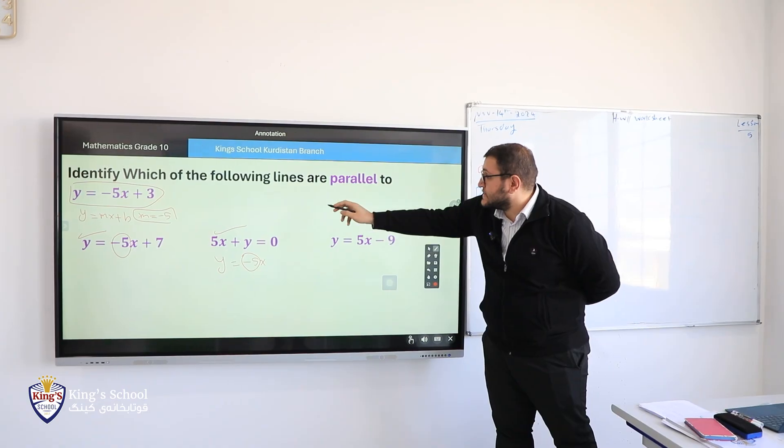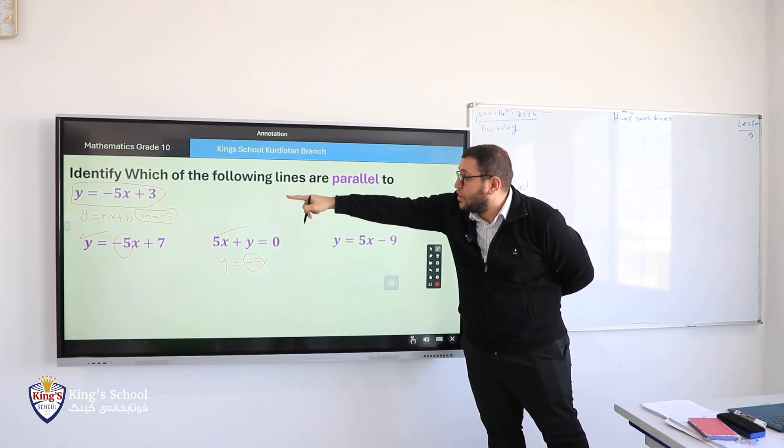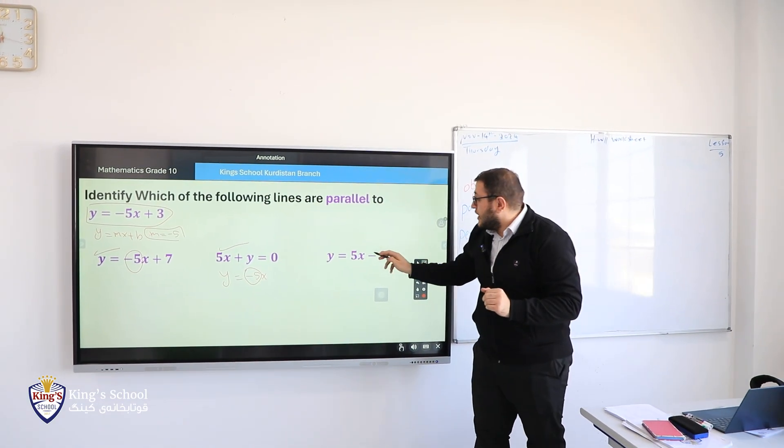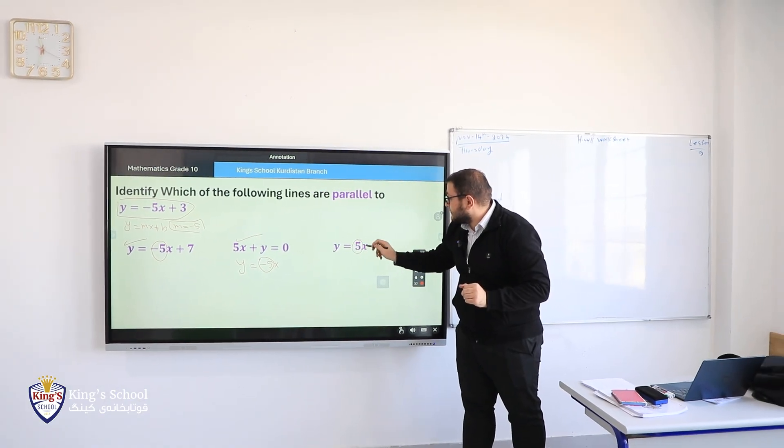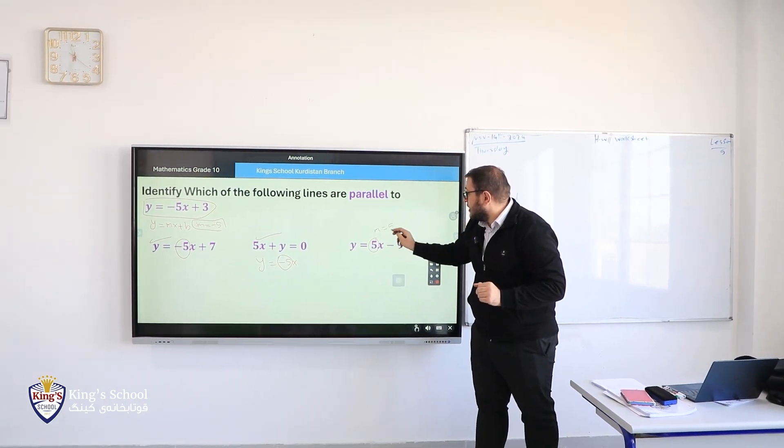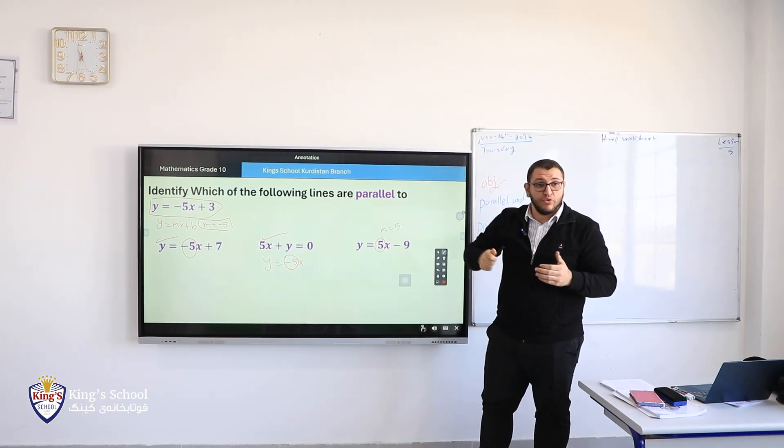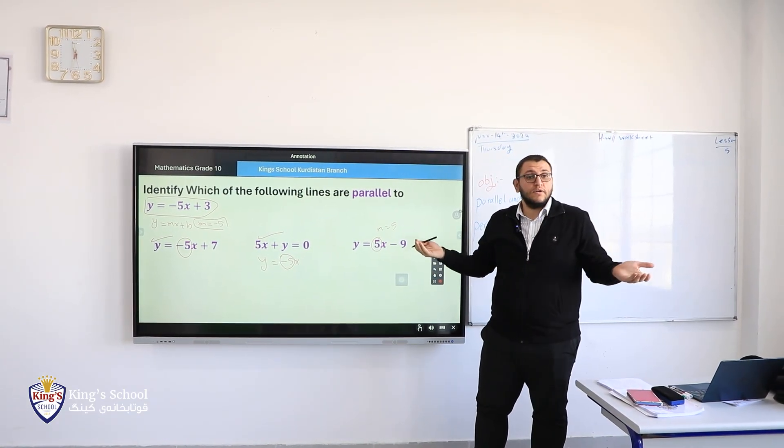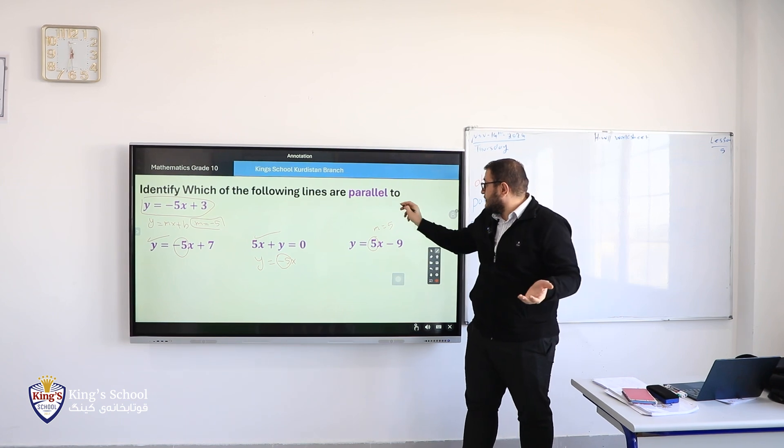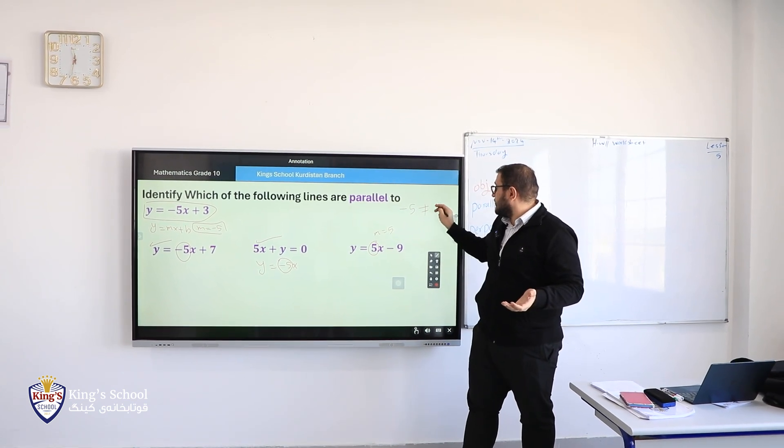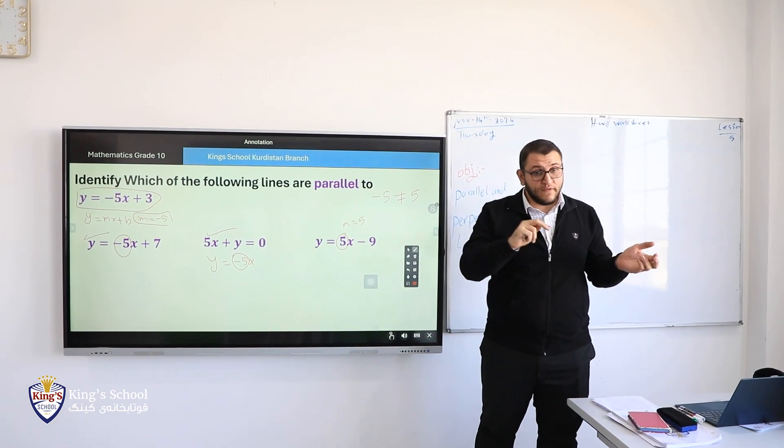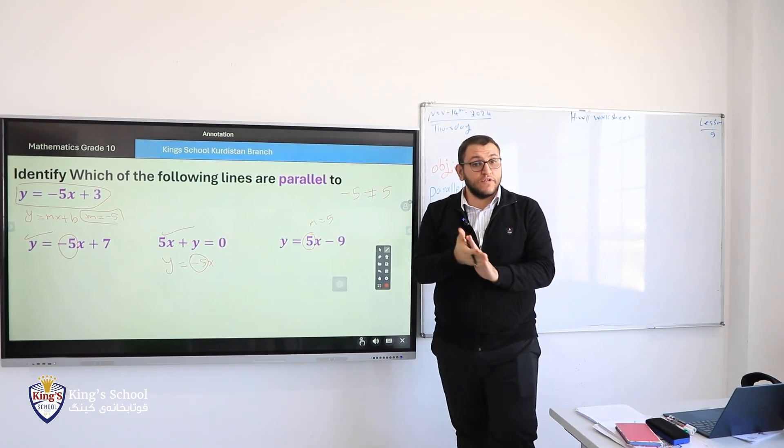Note that, again, it is in the same Y-intercept form, or we call it slope-intercept form, same meaning. Here the slope is 5, M equals 5, and the slope of the equation that we want to know is negative 5. So they are not equal. Negative 5 does not equal to 5. Even though they are the same number, 5 and 5, but different sign, they are not equal.